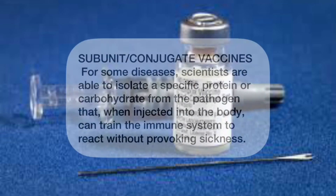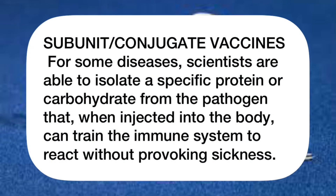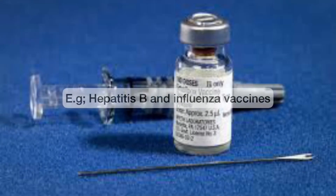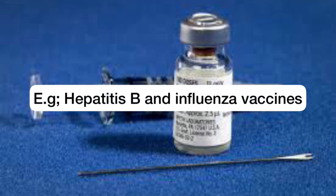The third type of vaccine is the subunit or conjugate vaccine, in which specific proteins or carbohydrates are isolated from the pathogen so that, when injected into the body, it can train the immune system to react without provoking sickness. Examples of the subunit or conjugate vaccines are the hepatitis B and influenza vaccines.